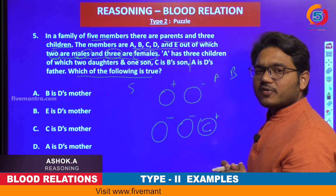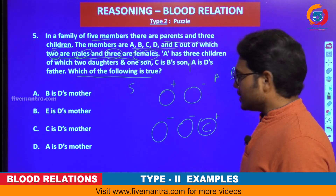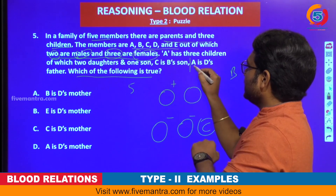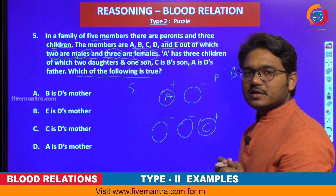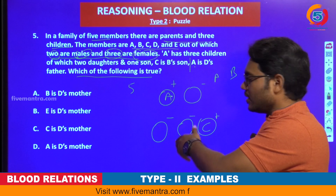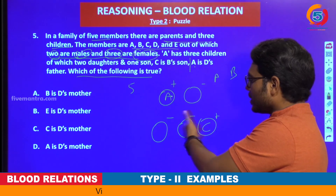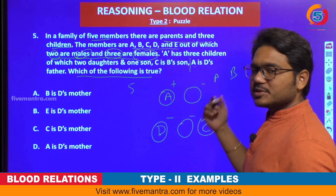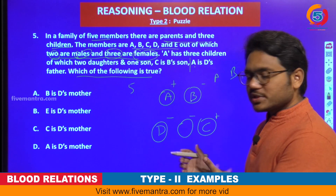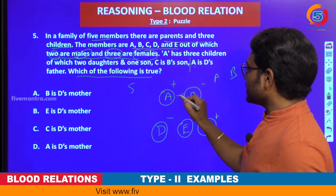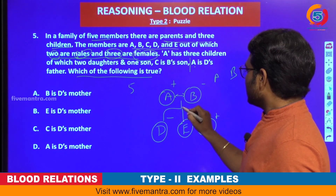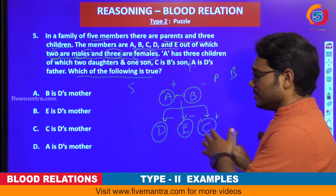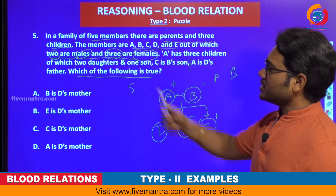A is D's father. So again, another piece of information: one father is there and that father is A. So A is placed as father. D is a child of A. We have already filled the male child as C, so one among the remaining will be D. It is also obvious now that since A is father, B will be mother. The leftover member is E. This is the relationship tree we can draw from these given statements.